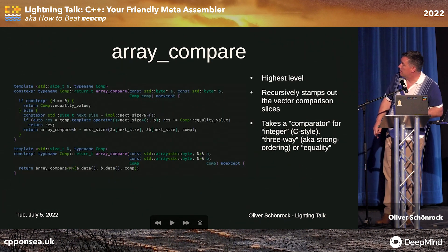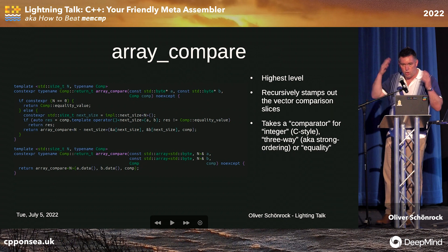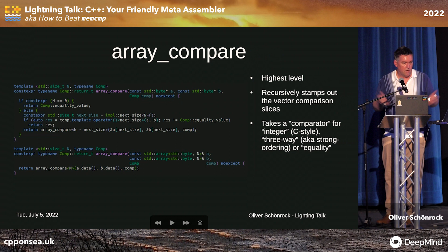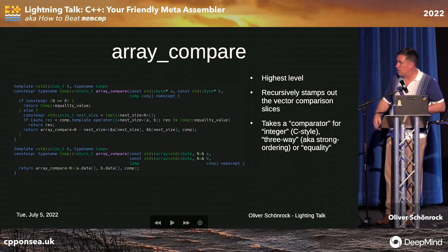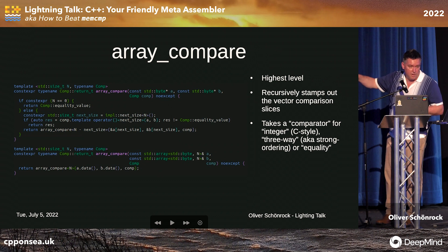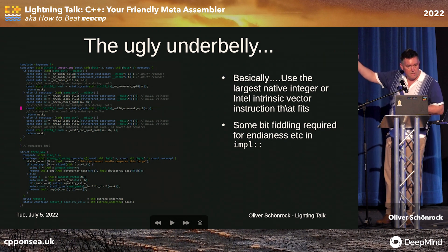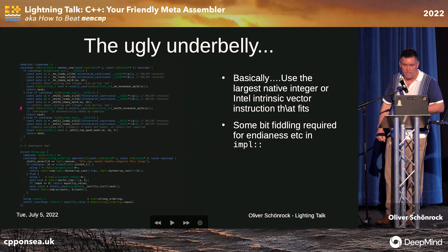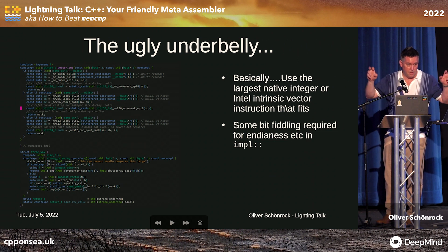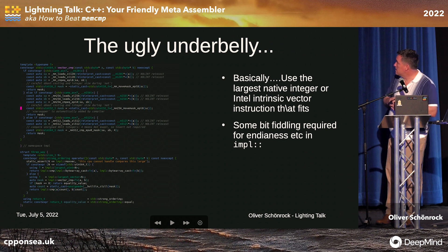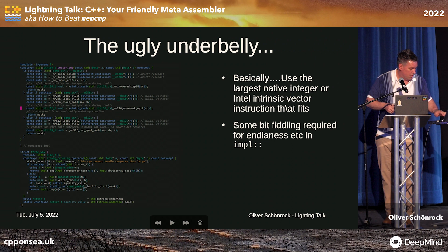This is what I ultimately came up with. Basically it's a recursive template function that chomps through pieces of the 20-byte hash — depending on your architecture, 8 bytes or 16 bytes at a time — recursively until it's done. It will just be a bunch of inlined machine instructions. I pass in a comparator so it can do different things, but this is the ugly underbelly: Intel intrinsic calls to vector instructions that do the right thing. It picks out the ones appropriate for that hash size — using C++ as an assembler, adapting to the data structure I'm comparing. There's some bit-fiddling for byte-swapping as well.